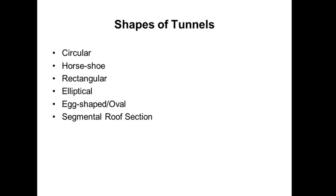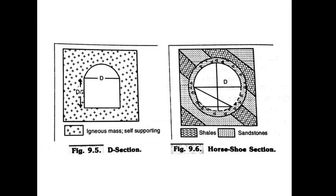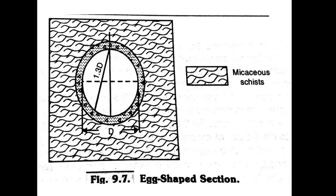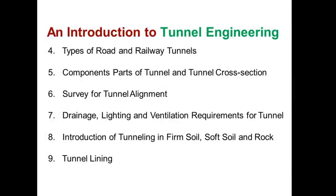Perimeter method. Shapes of tunnels: tunnels are mostly circular shape, horseshoe shape, rectangular, egg shaped, and segmental roof section. The circular section is mostly used for transportation of water supply lines and sewer lines. The horseshoe section is preferred for railway transportation. Other types include rectangular, egg shape, and circular sections.